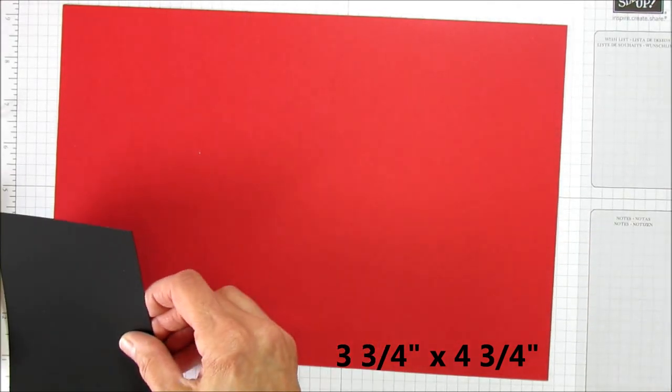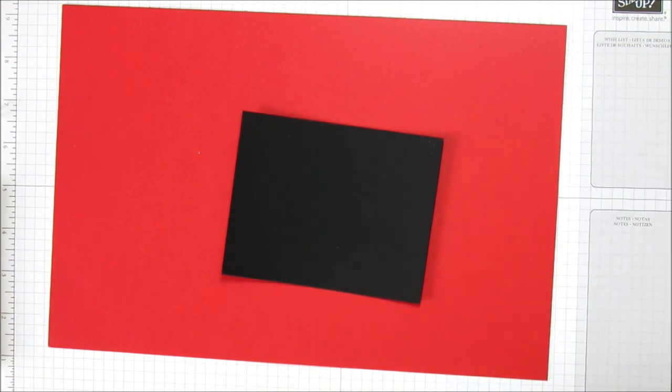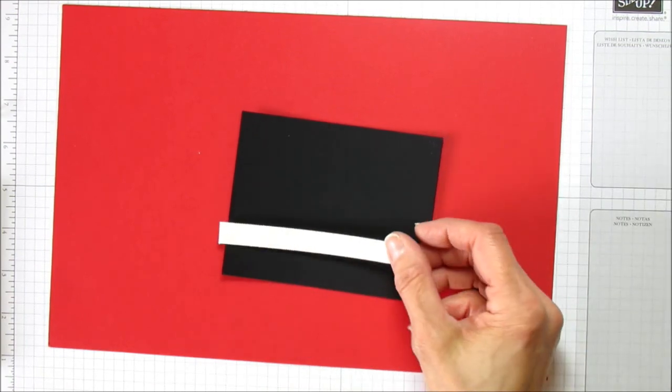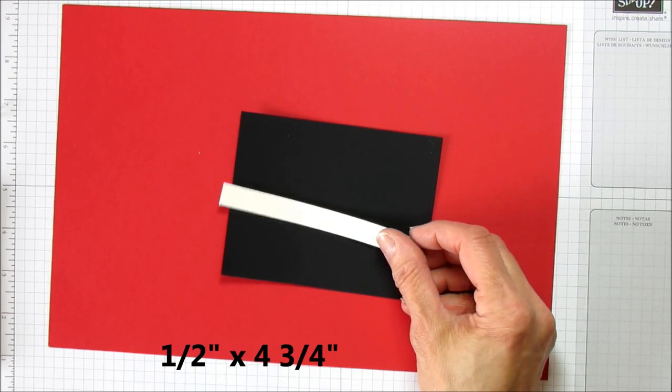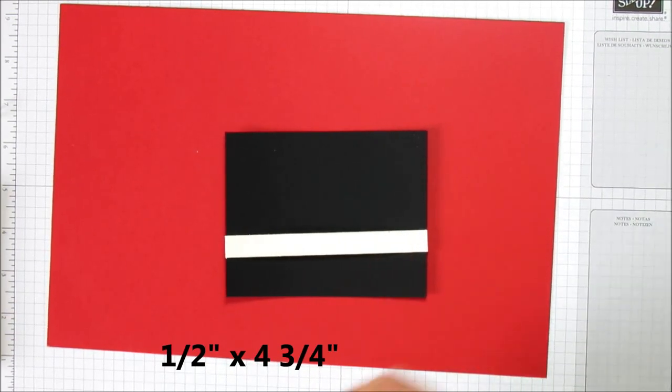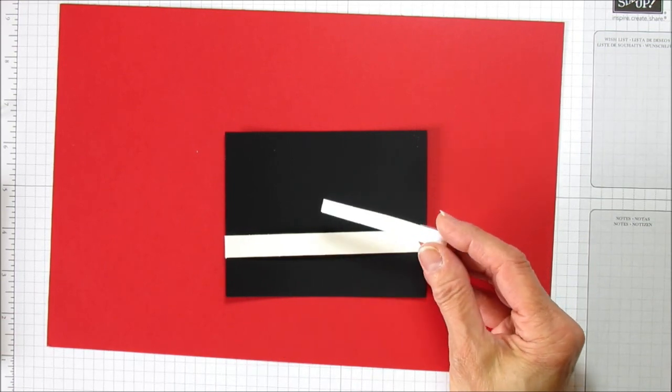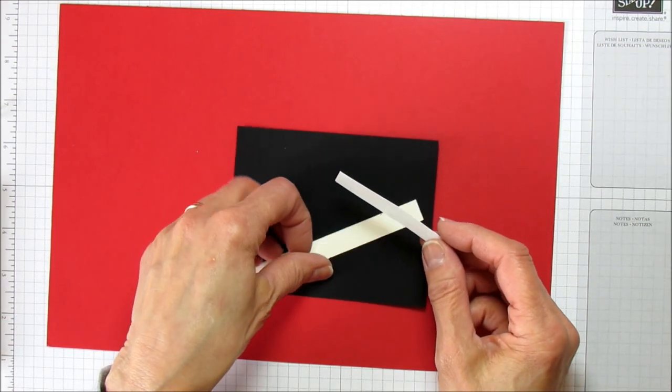This piece is four and three-quarters by three and three-quarters for the chalkboard. Then this piece measures one-half inch by four and three-quarters because this is the little chalk holder, and then just a piece of scrap for your piece of chalk.